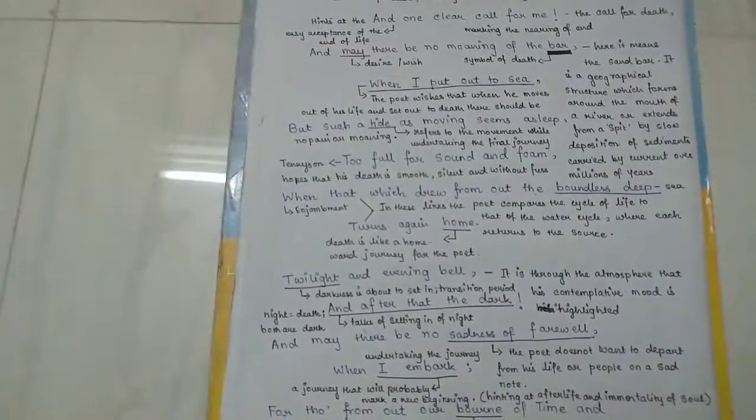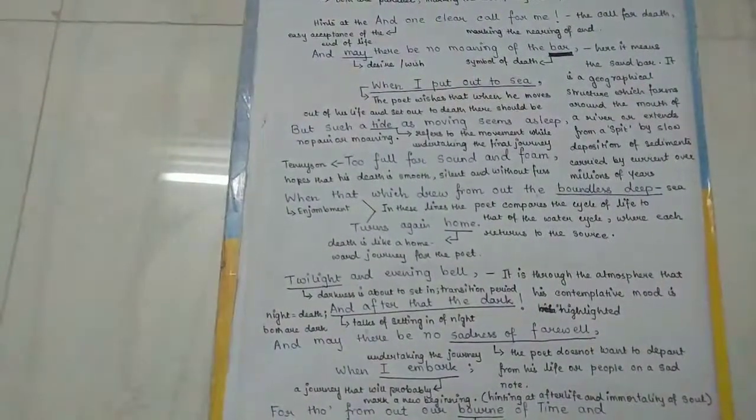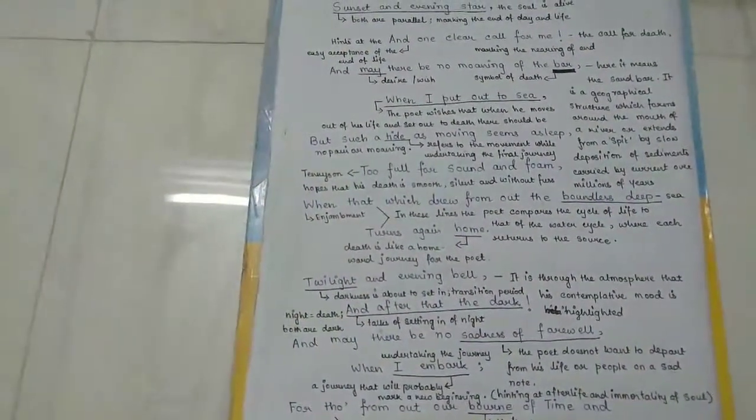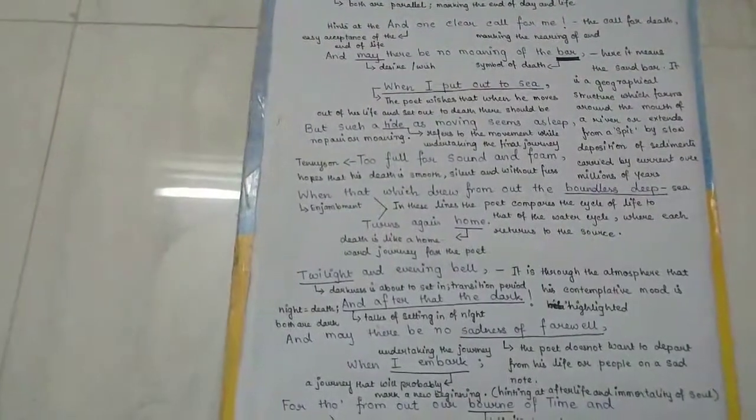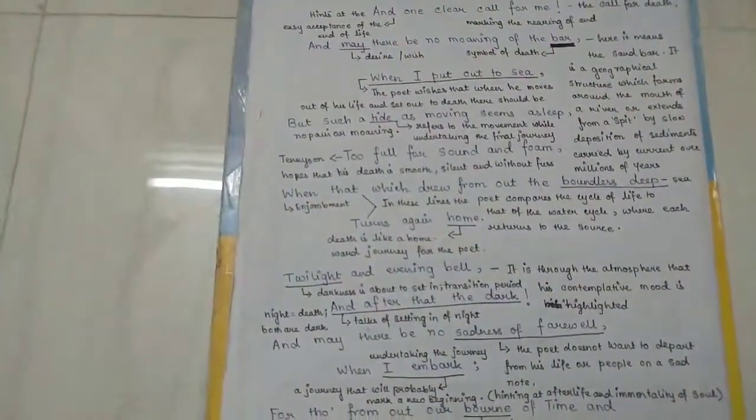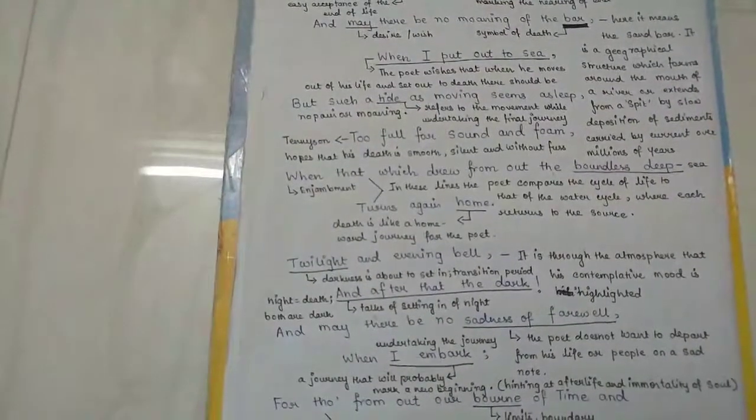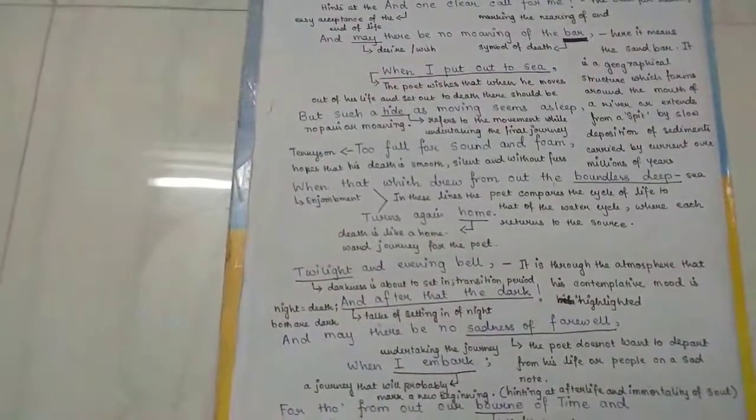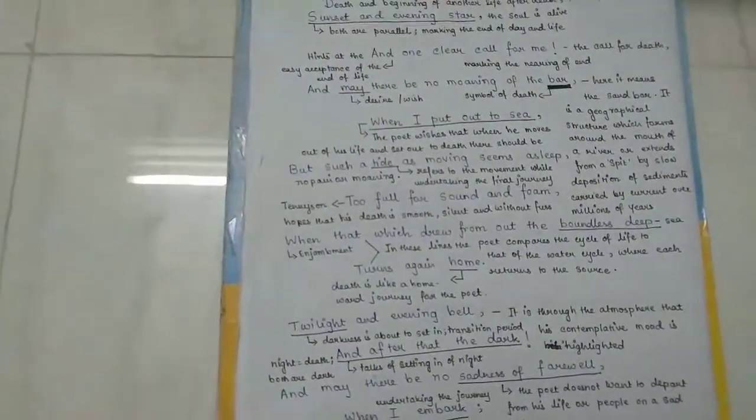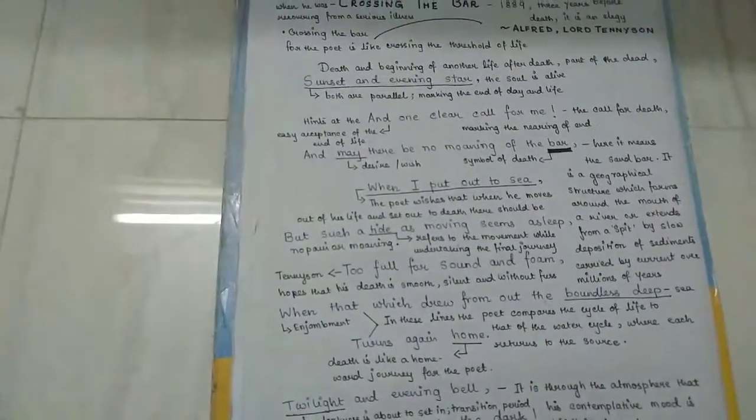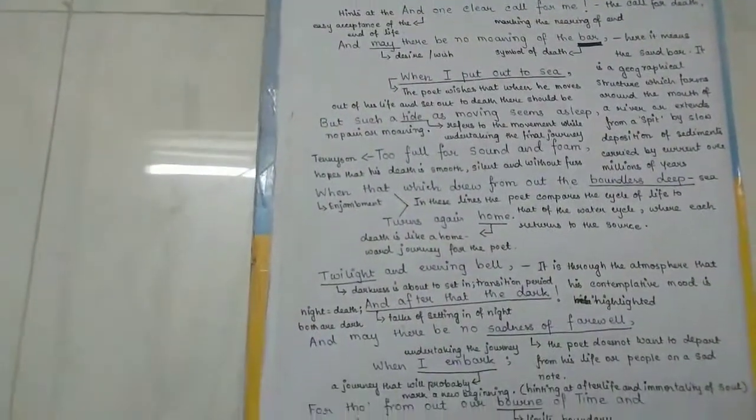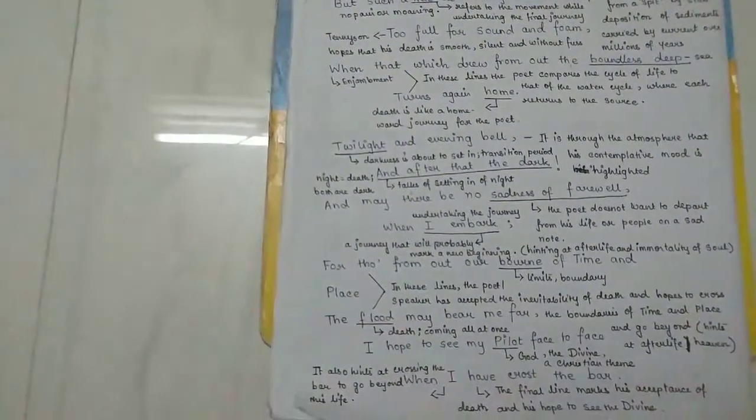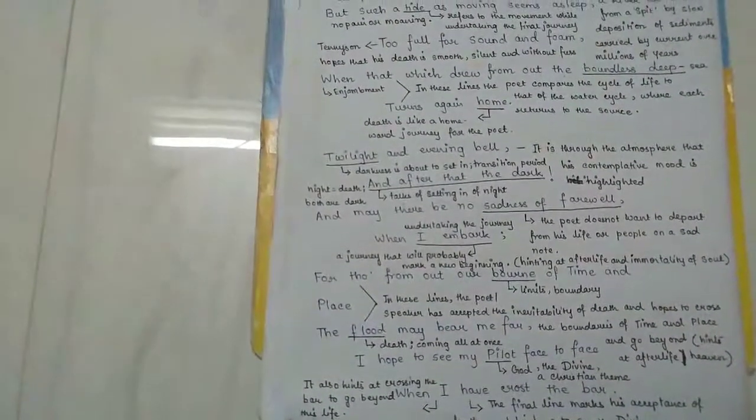There are not many difficult words that have been used here, with the exception of just one word, born, which you may not have come across earlier. However, if you remember these key concepts, key themes of death, time, and the interplay between the two, I'm sure it will not be difficult for you to understand the poem. So that's it. That brings us to the end of the poem. I hope you have understood it quite clearly. If you have any doubts or confusions, do let me know in the comment section.